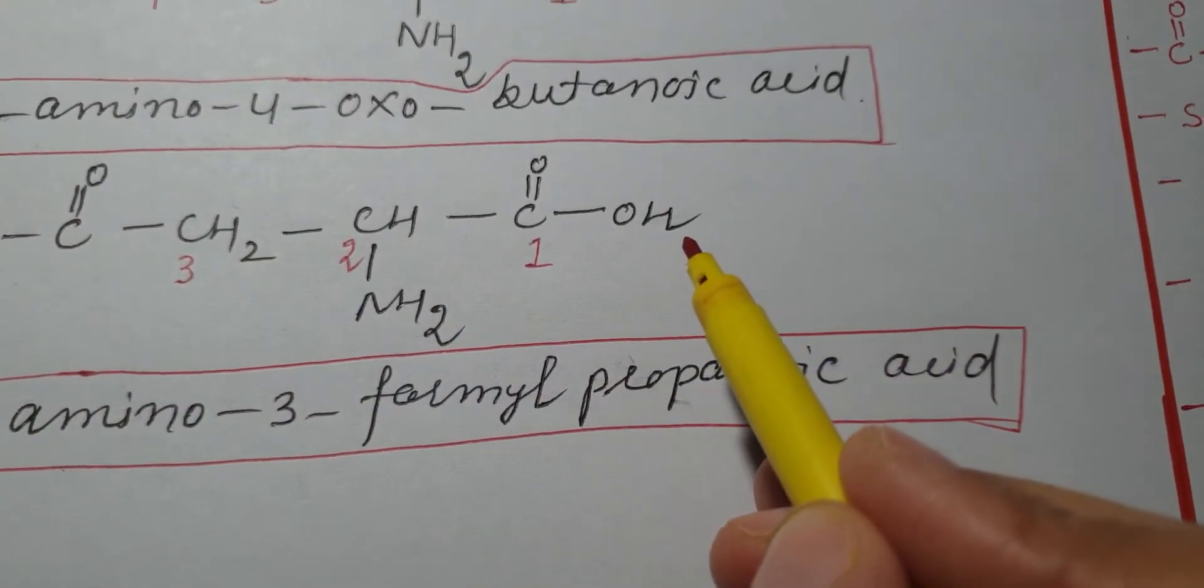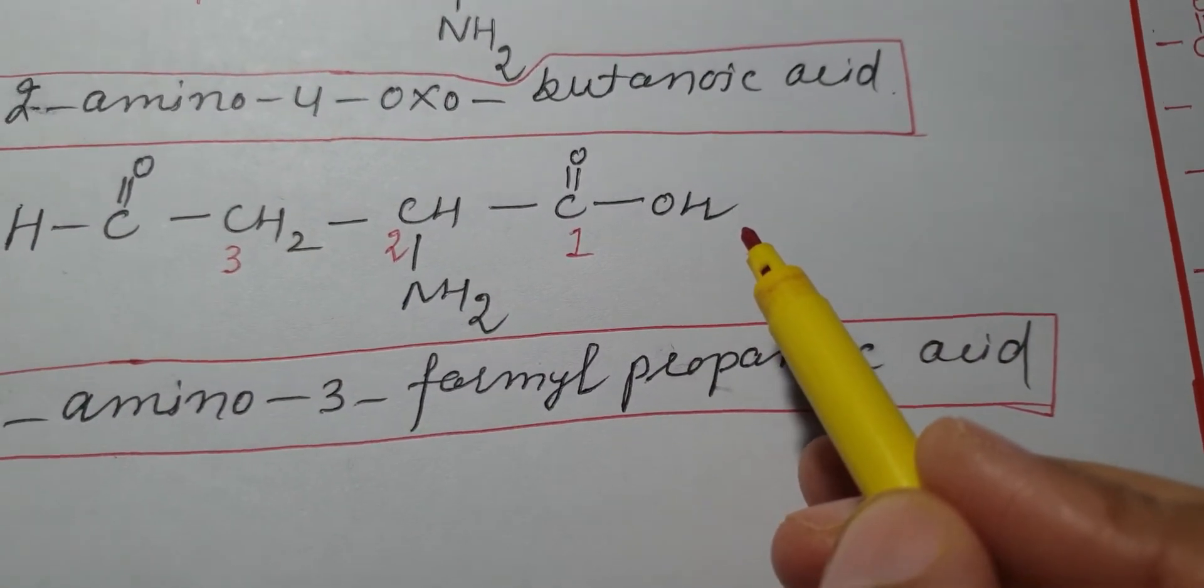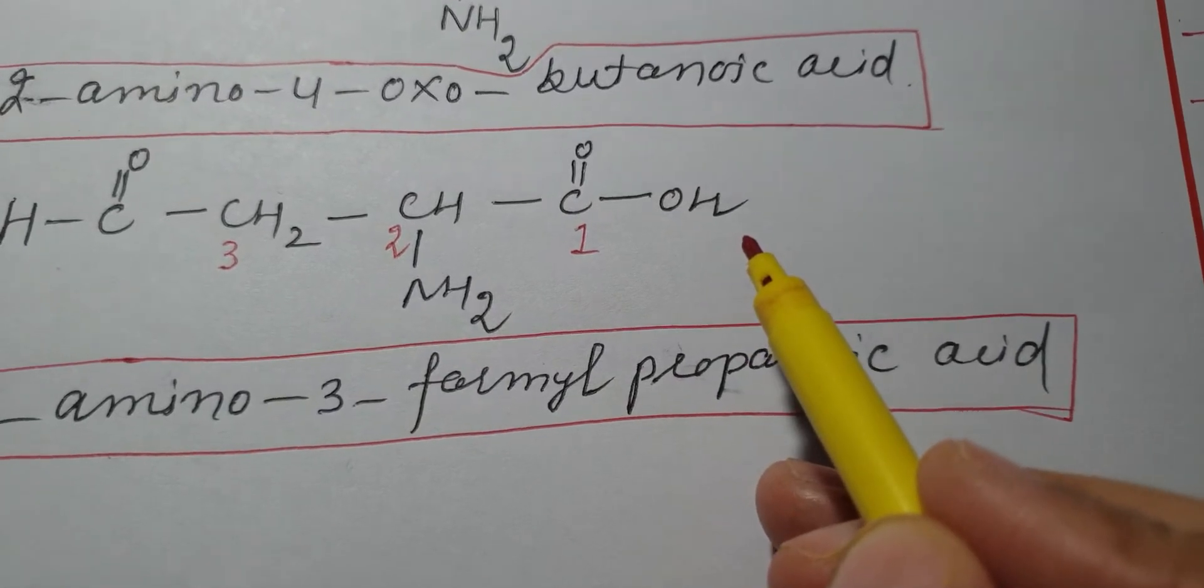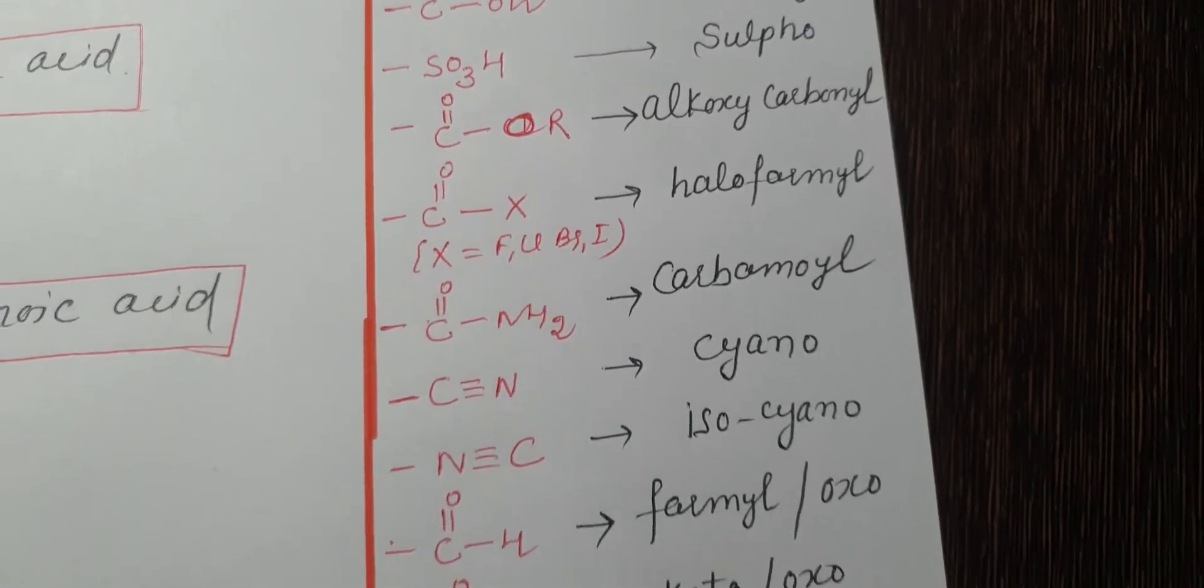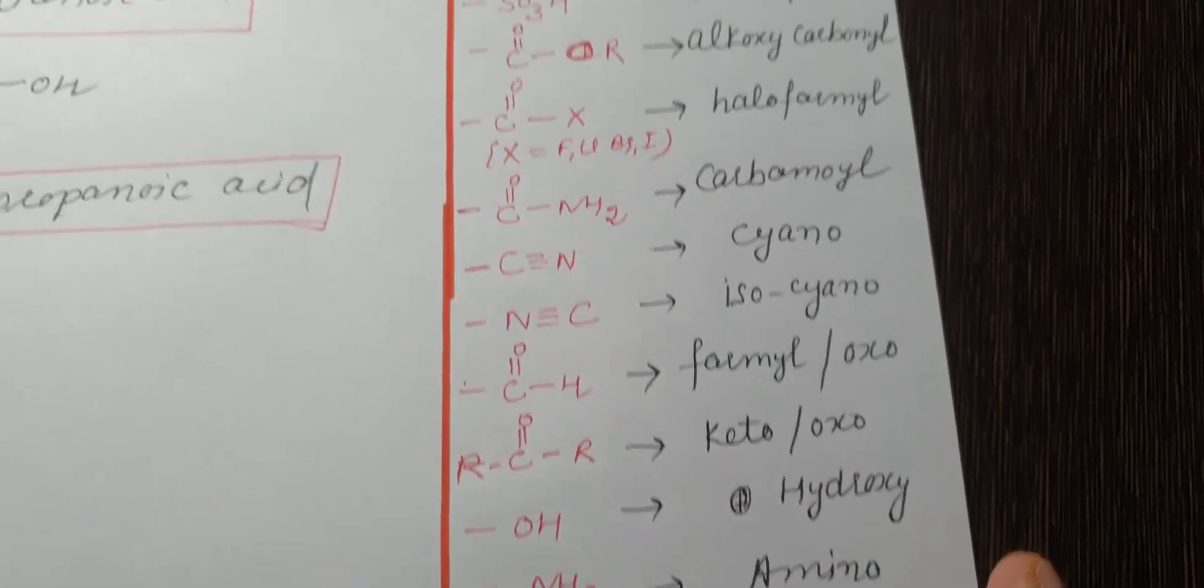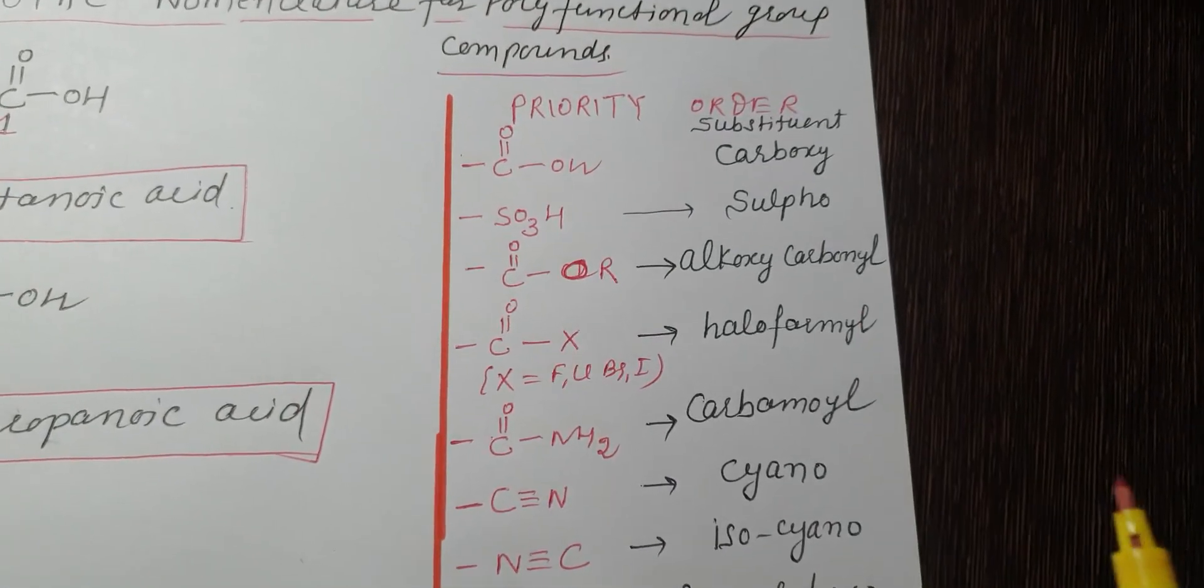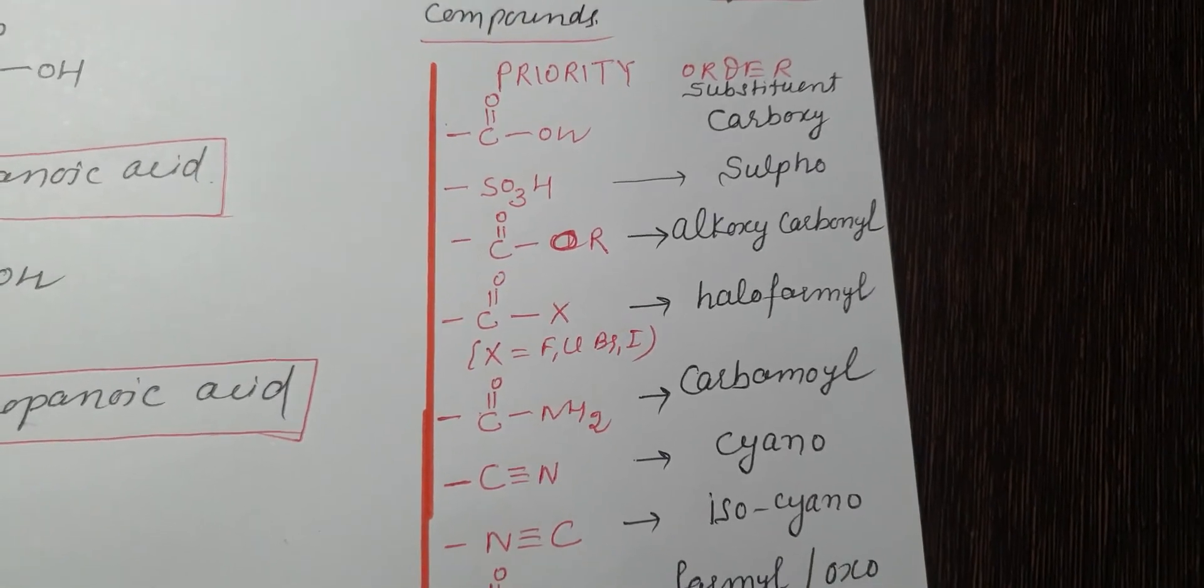Now, COOH is my principal functional group because we have a priority order for all functional groups. COOH is at the top of the priority list.